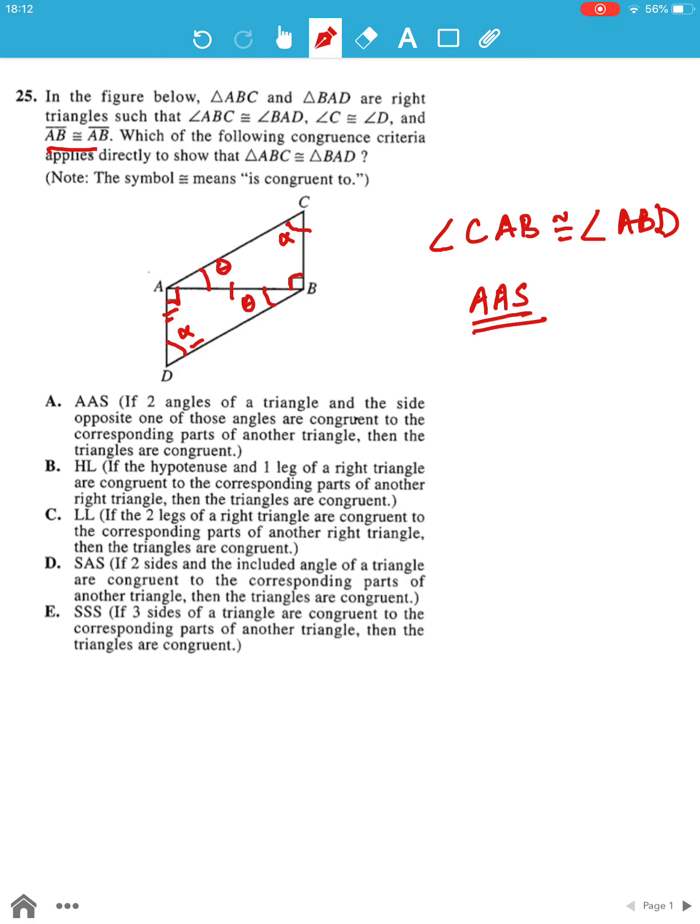This states that if two angles of a triangle and the side opposite one of those angles are congruent to the corresponding parts of another triangle, then the triangles are congruent.